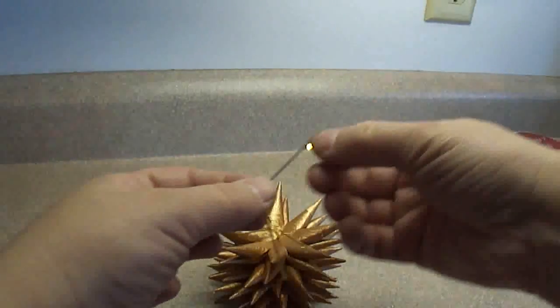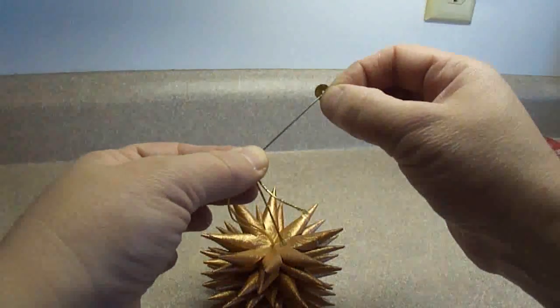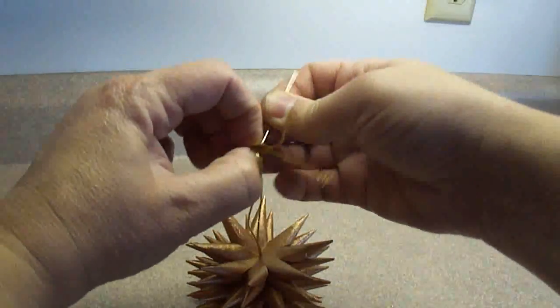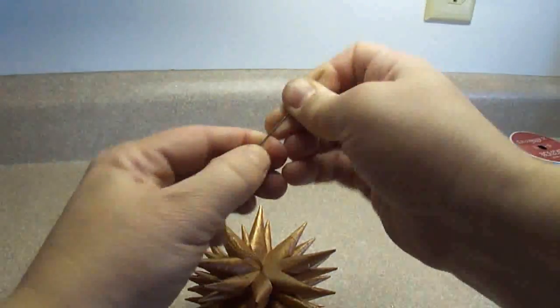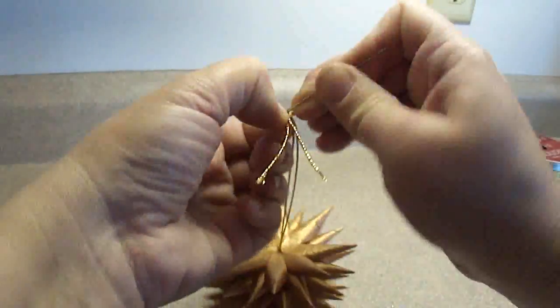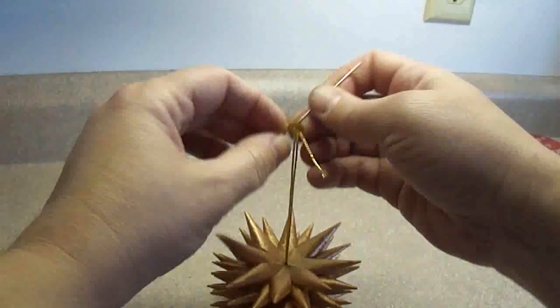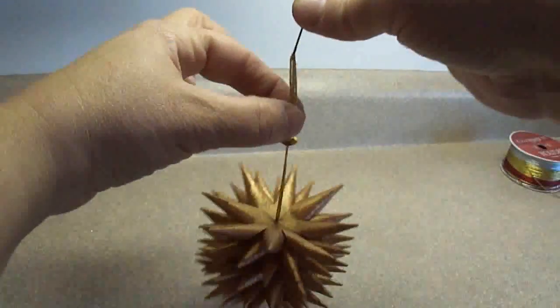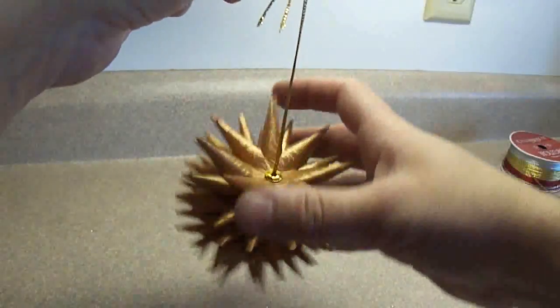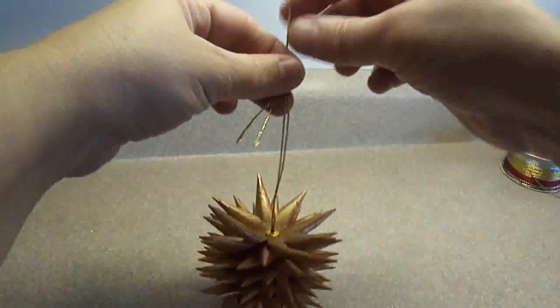Then you're going to put a sequin on last, and this is a bit of a challenge because the sequin hole is kind of small, so you have to kind of wiggle it around to get it through. Pull the string down and push the sequin all the way until it's touching the stars like so.